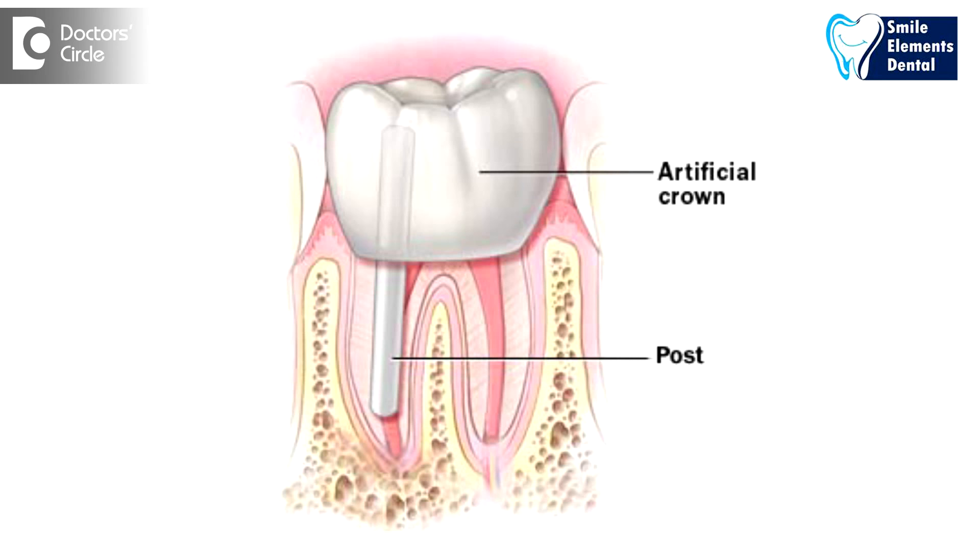Sometimes even when we see the root canal is done well, we do see failures that happen, which could be because of other reasons during the cleaning, shaping, and irrigation process of the tooth. And in spite of all that being followed well, it could be because of the crown that was placed after the root canal was done. A lot of studies have shown that endodontic therapy is very much dependent on how the prosthetic process has gone after that. If there is no good integrity between the crown and the root canal tooth, the failure of the root canal is much higher.